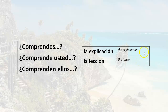Using the formal 'usted' — 'do you understand the explanation?' becomes 'comprende usted la explicación.' 'Do you understand the lesson?' — 'comprende usted la lección.' If I want to ask 'do they understand the explanation?' — 'comprenden ellos la explicación.' And finally, 'do they understand the lesson?' — 'comprenden ellos la lección.'